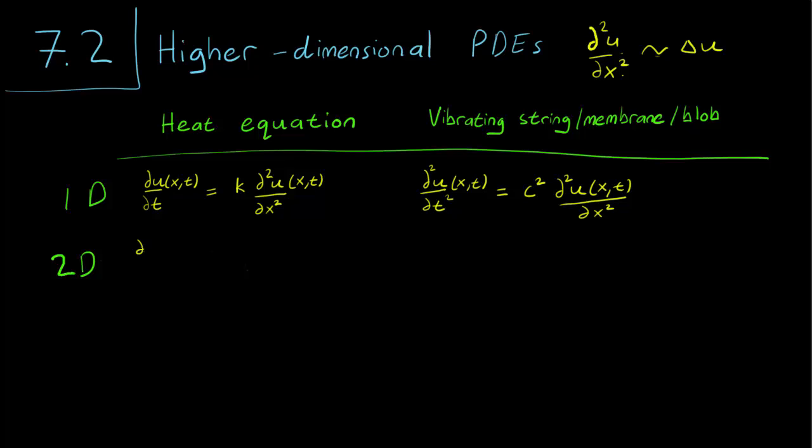The time derivative remains the same, u(x,y,t), and we replace the second derivative with the Laplacian. So it's going to be, instead of d²u/dx², it's just going to be ∂²u/∂x² + ∂²u/∂y². That's what the Laplacian is. Right, so that's your heat equation for two dimensions.